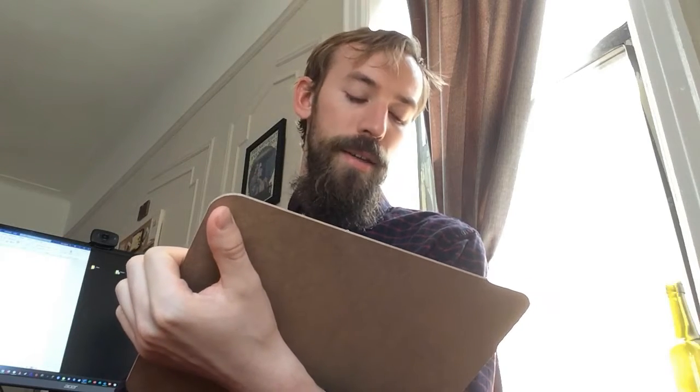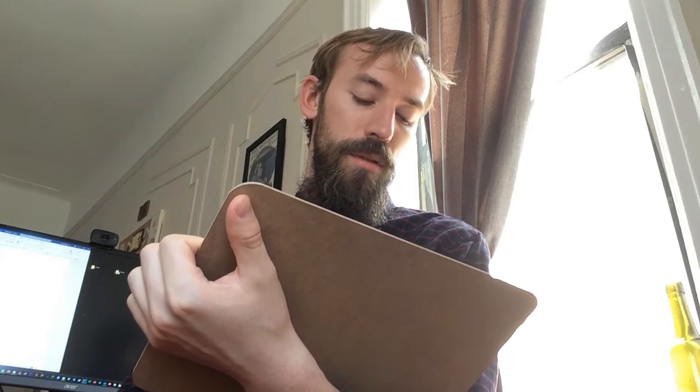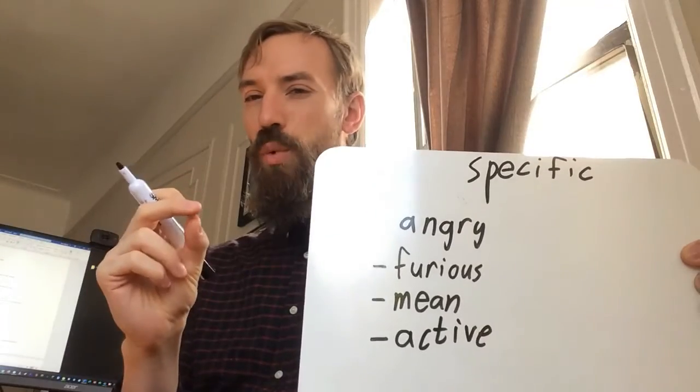And you can get even more specific. You can say what kind of vegetables do you want or what kind of other things do you want. So, I'm going to show you another example for the word angry. We'll find a different or more specific word for the word angry. So, for angry, I could say furious. I could say maybe mean. I could say active. These are all more specific words than angry.